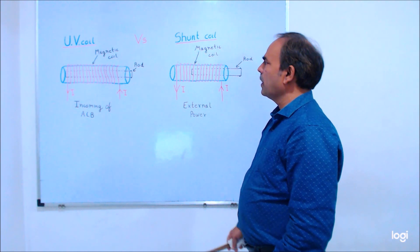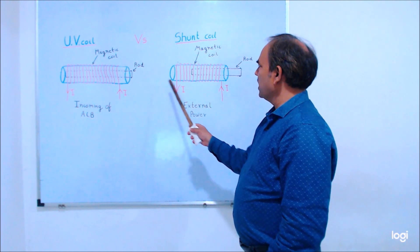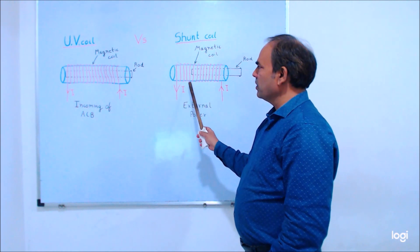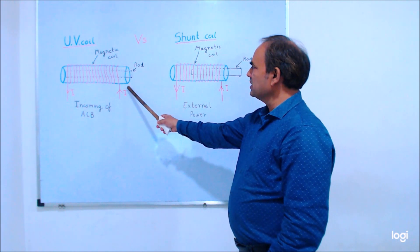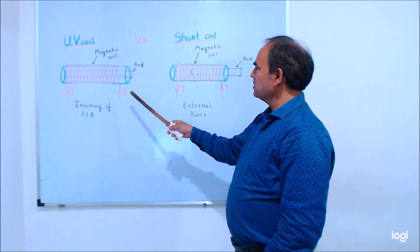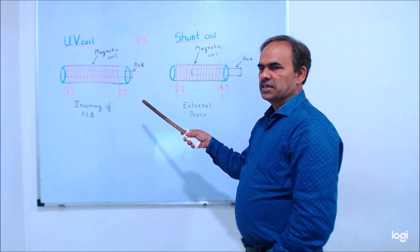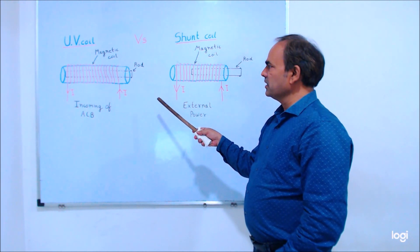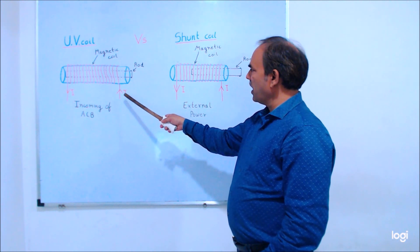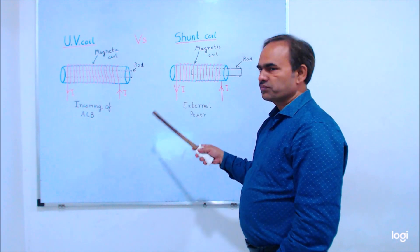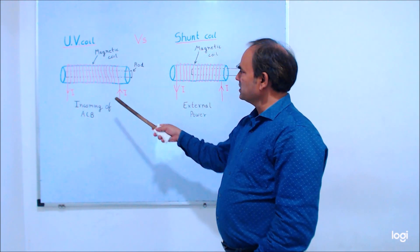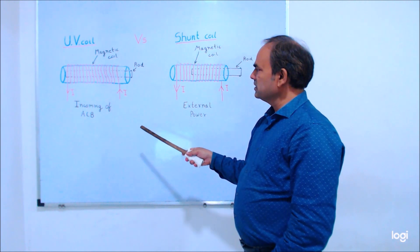The UV coil and shunt coil are both similar — they look the same, the mechanism is the same, and both are used in the air circuit breaker. Both coils are available in different supply voltages.